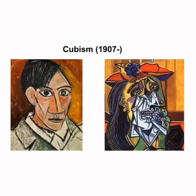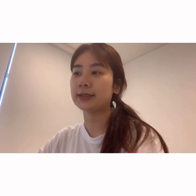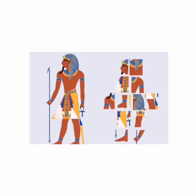Cubism started in ancient Egypt, where the Egyptians had a strict set of rules for painting. In order to show the characters completely, the Egyptians did not base themselves on what they saw with their eyes. The person in the picture has their head on the side, eyes and shoulders on the front, and from the waist down on the side. In this way, the painting would be more realistic.